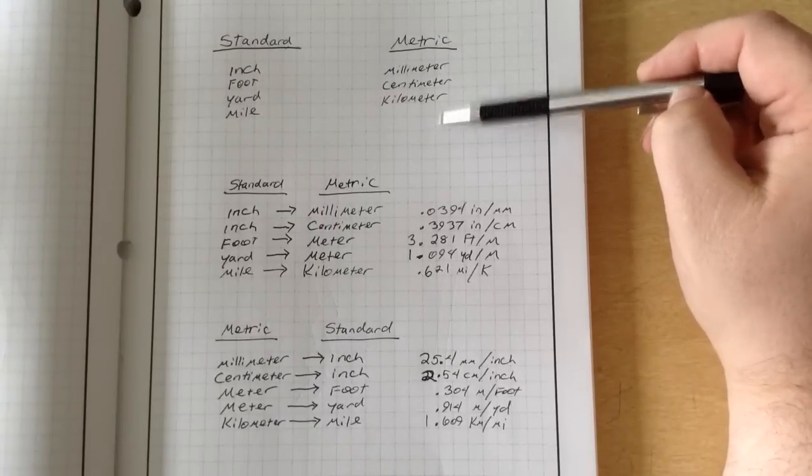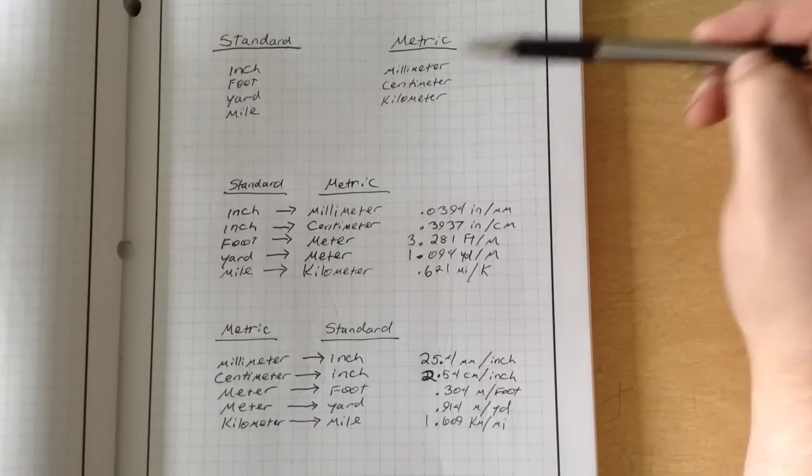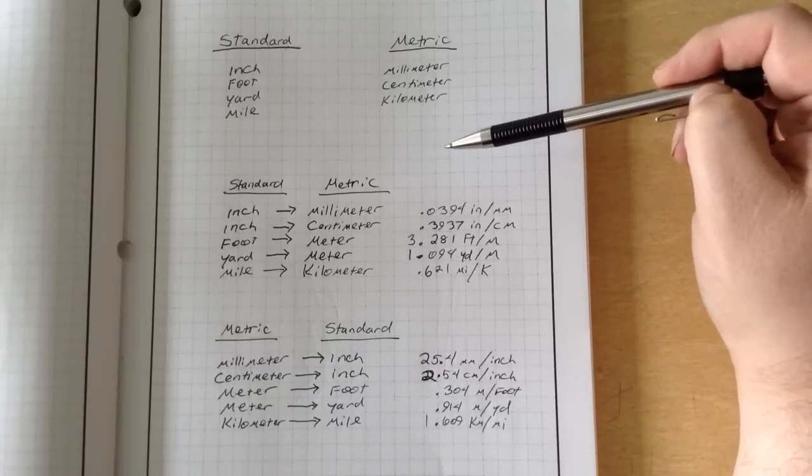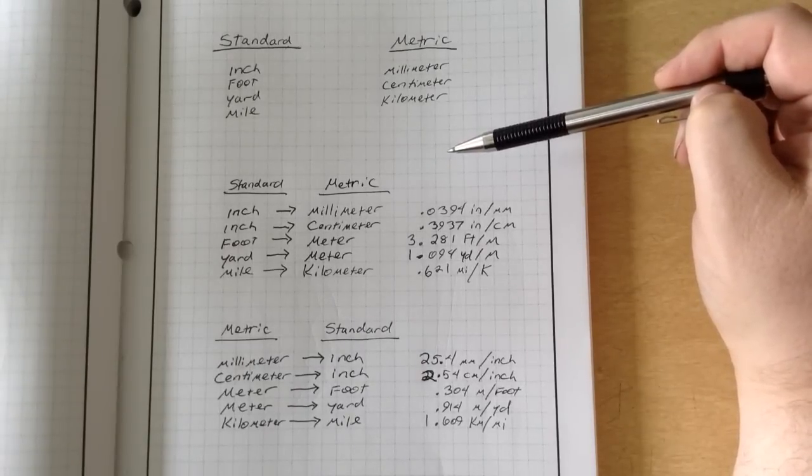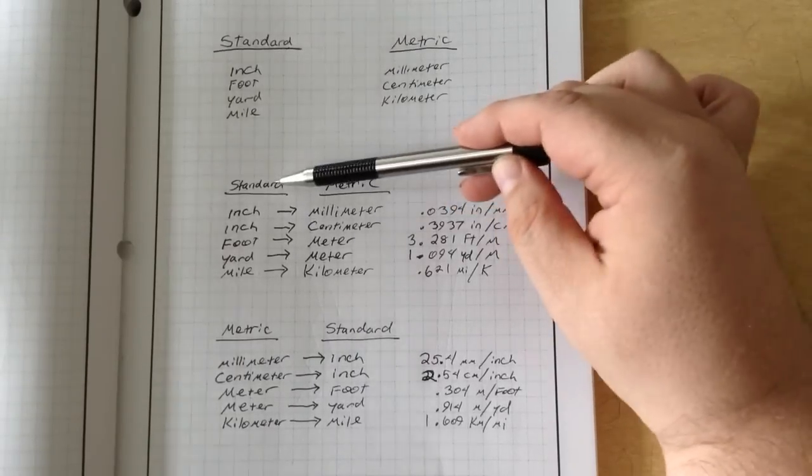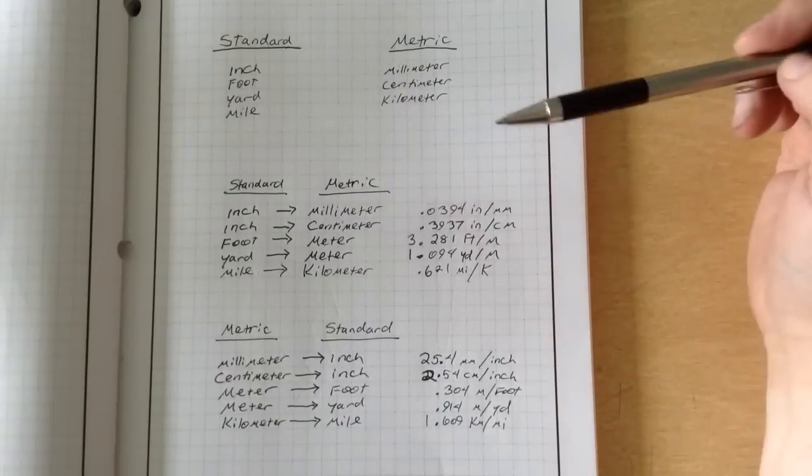The metric system are things like millimeters, centimeters, kilometers, and of course meters. Now what that does is cause a little bit of difficulty because we constantly have to switch back and forth between standard and metric units.